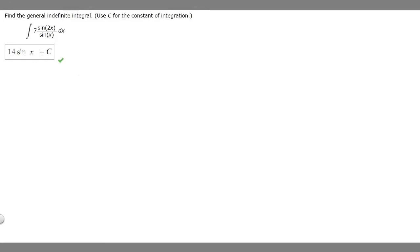In this problem we're told to find the general indefinite integral, using c for the constant of integration, of the integral of 7 times sin(2x) over sin(x) dx. Let's start by rewriting our integral: 7 times sin(2x) over sin(x) dx.